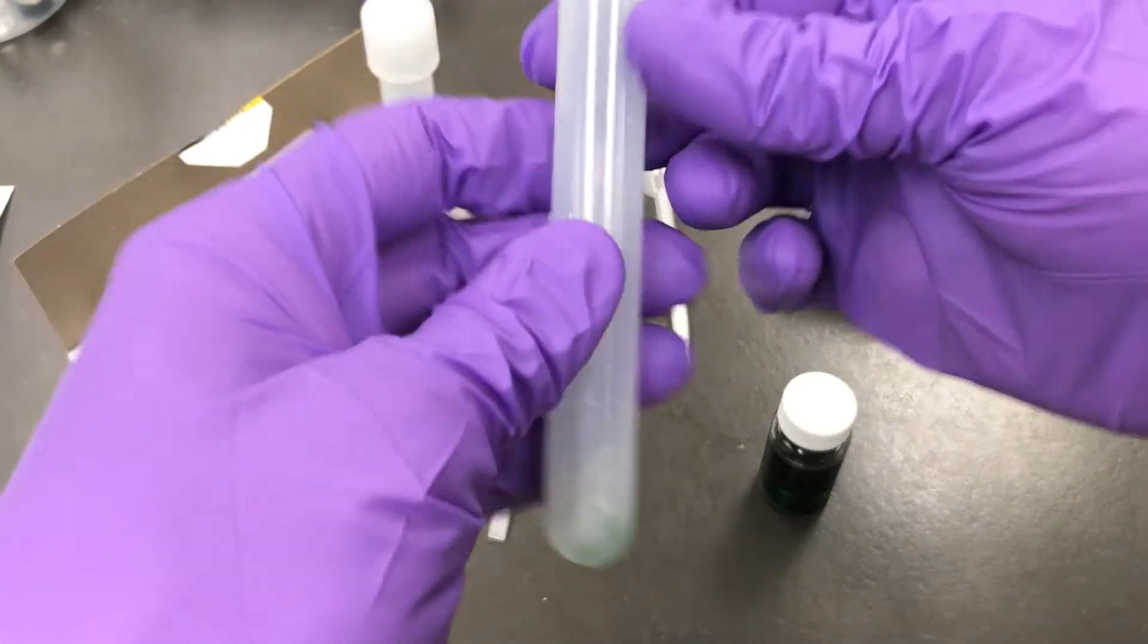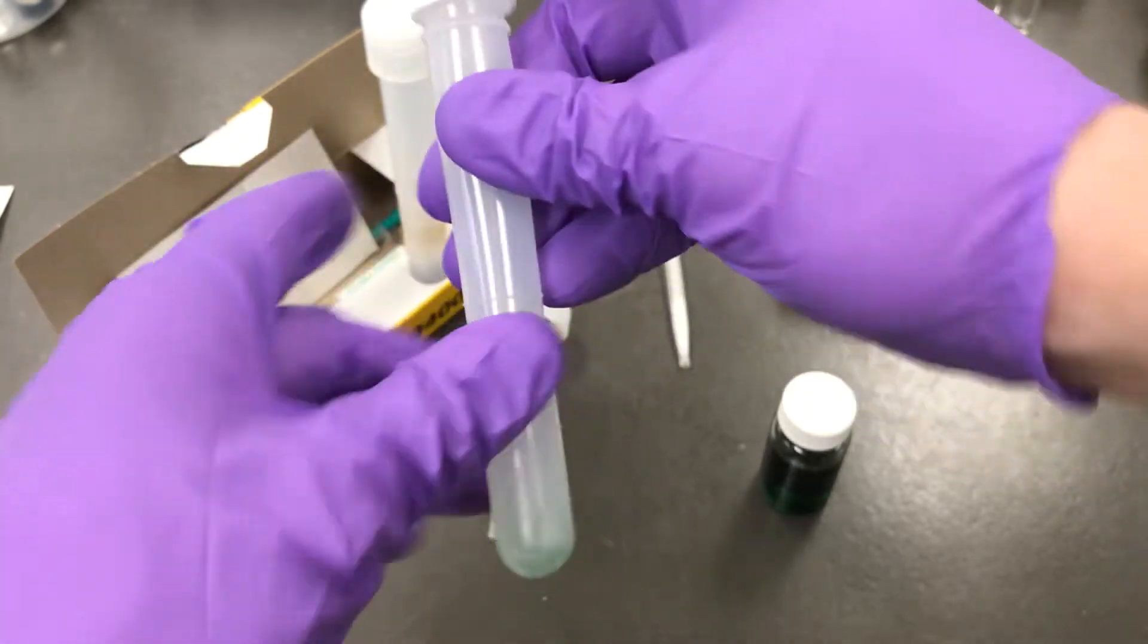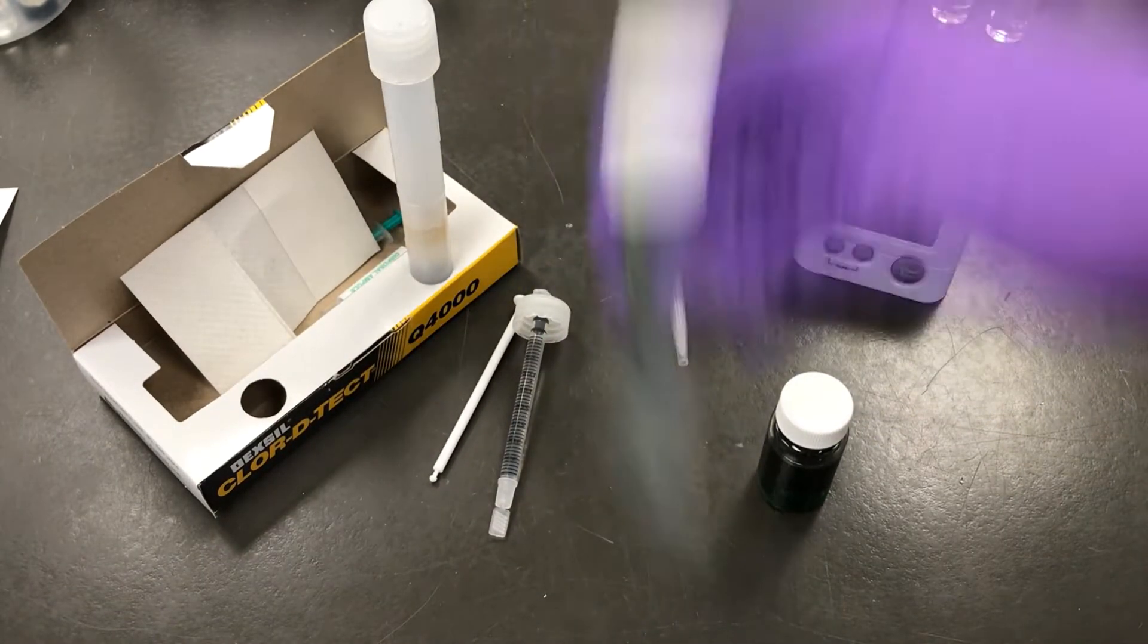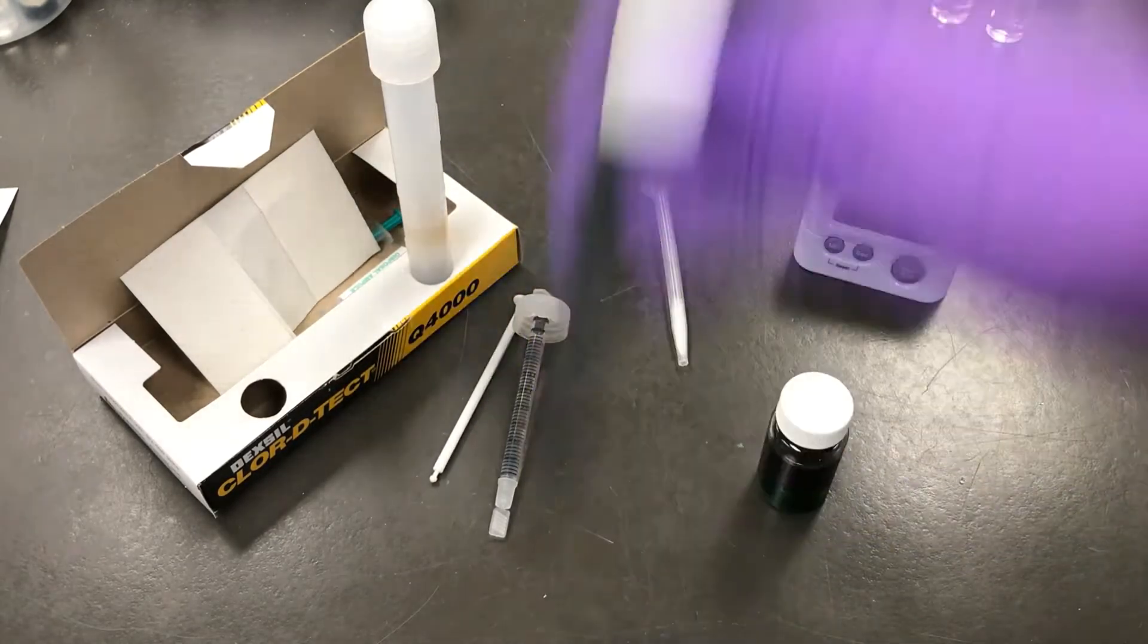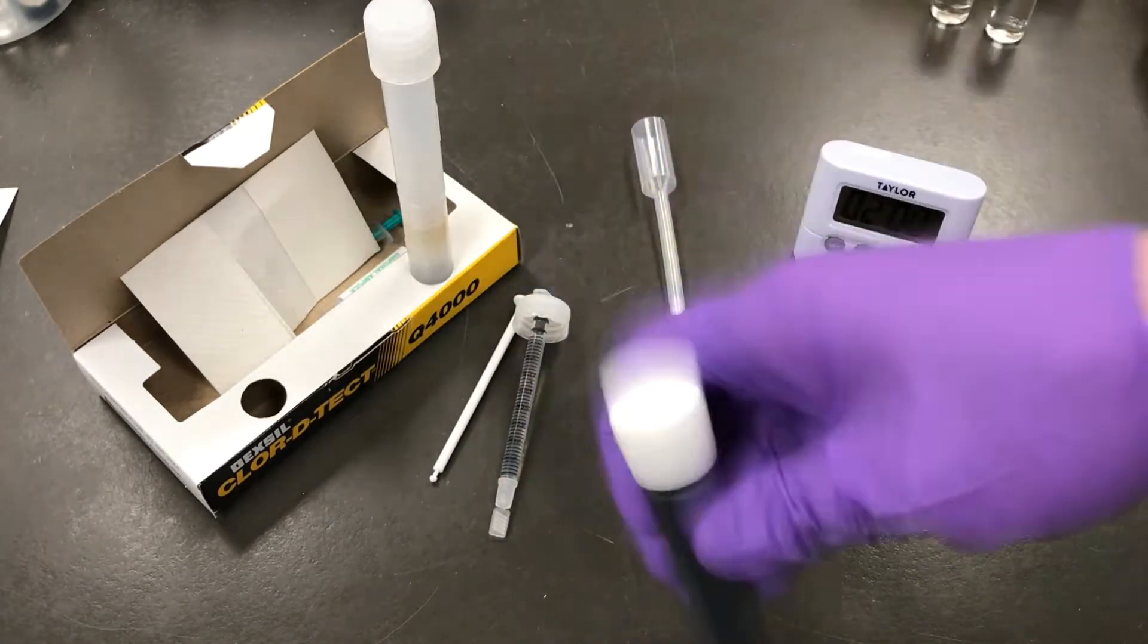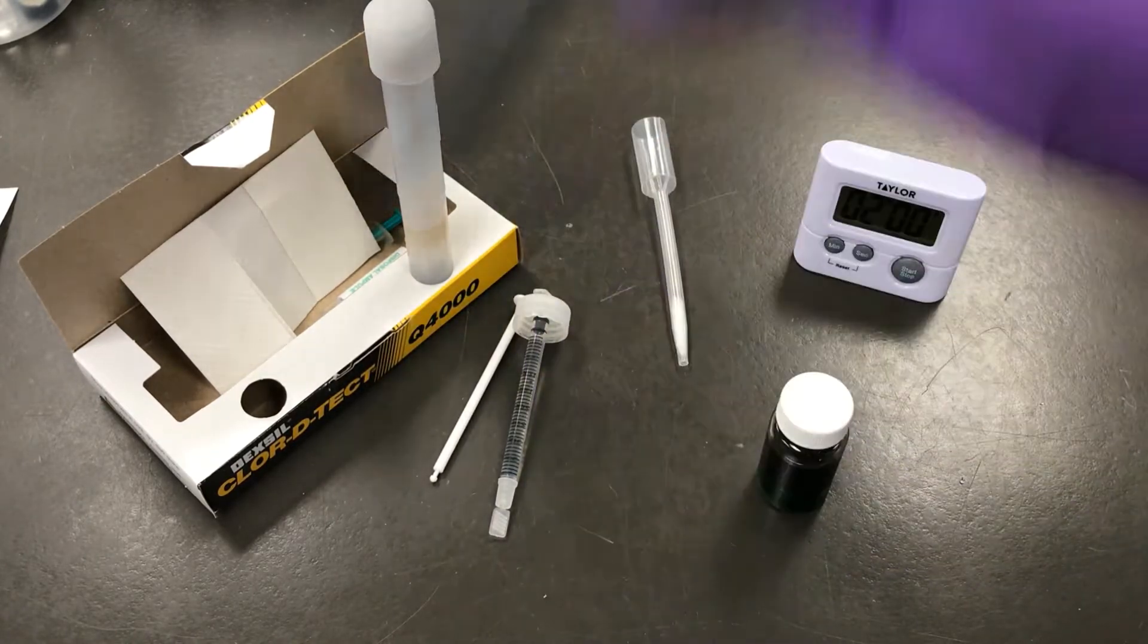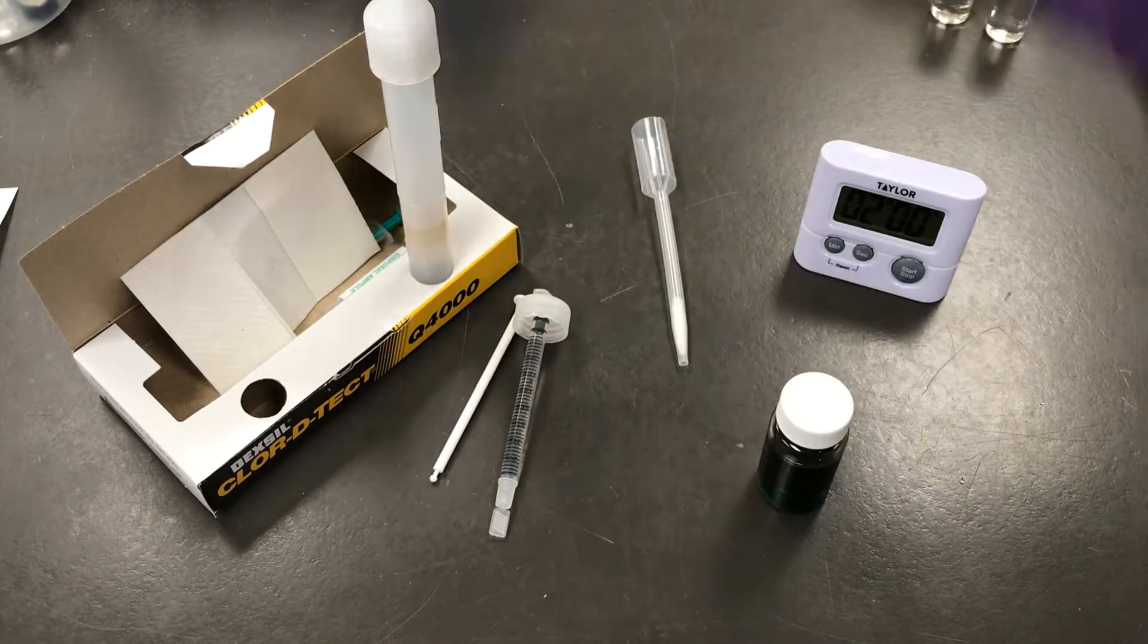Next, break the gray colored top ampule. Shake it vigorously for 20 seconds, then intermittently for 40 seconds for a total of 60 seconds. And you'll notice the inside of the test tube will be coated black.